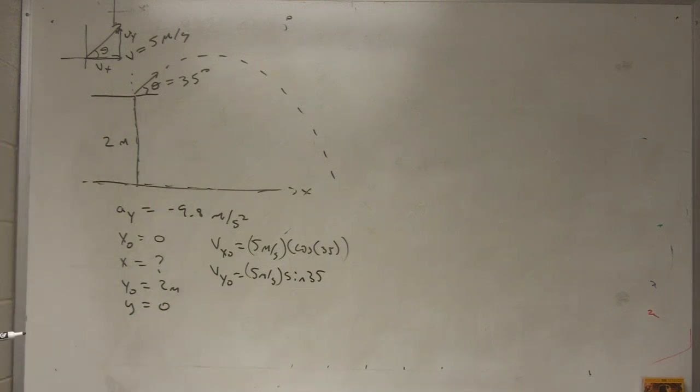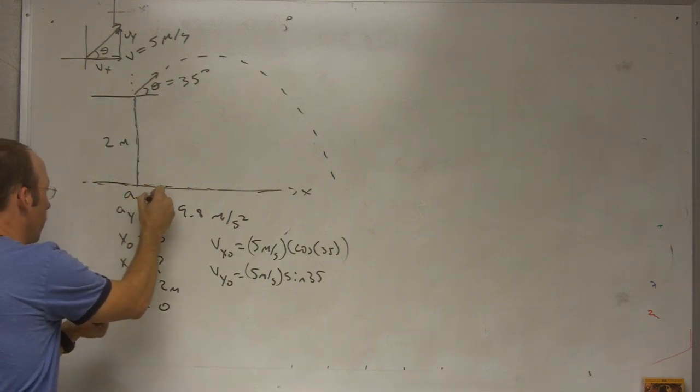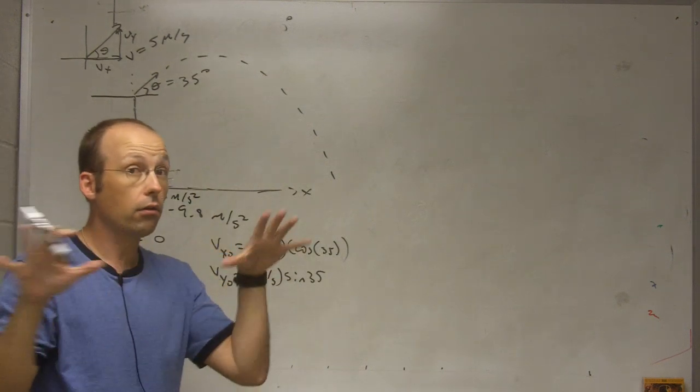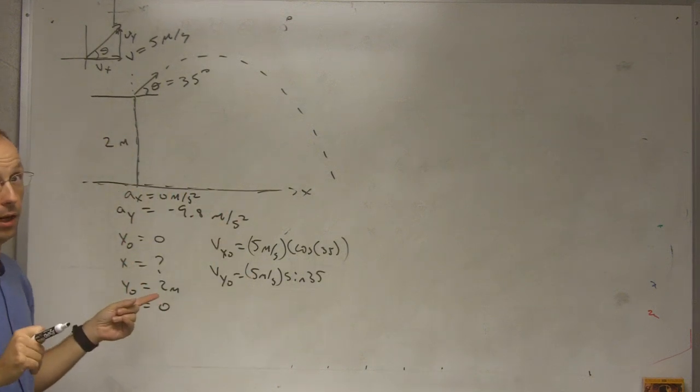Okay, so when we're dealing with projectile motion, since the velocity and the acceleration in the x direction, which is actually Ax, you can write this as zero if you want, is zero, and they don't relate, we actually have two one-dimensional problems that just happen to have the same time.